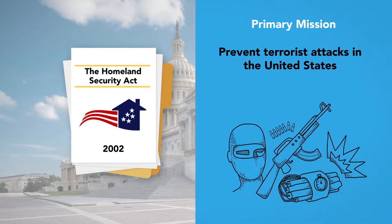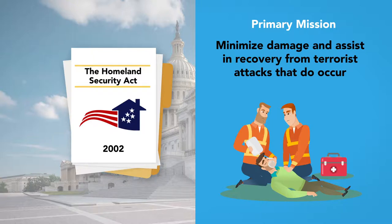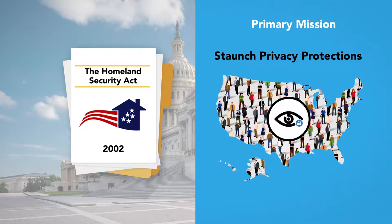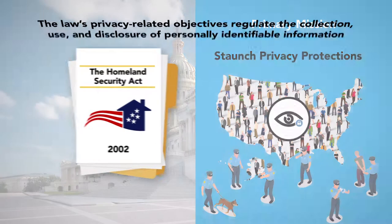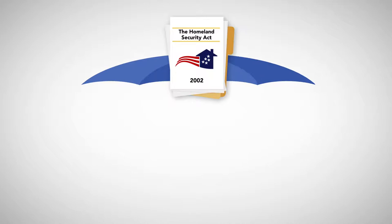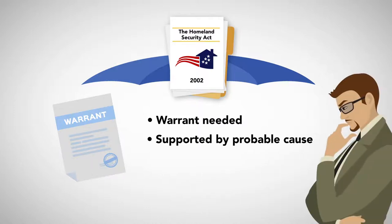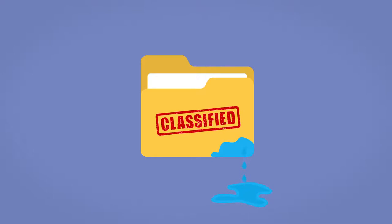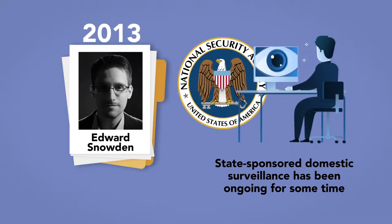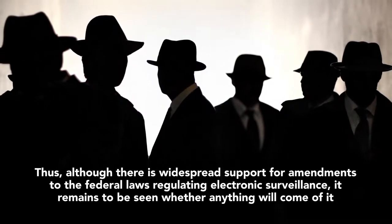The Homeland Security Act of 2002, originally introduced in the aftermath of the September 11 terrorist attacks, represented one significant development in federal electronic privacy protections. Its primary mission was to prevent terrorist attacks, reduce vulnerability to terrorism, and minimize damage from attacks that do occur. However, the law also introduced staunch privacy protections designed to ensure that domestic citizens' privacy rights remain intact despite increased law enforcement efforts. The law's privacy-related objectives regulate the collection, use, and disclosure of personally identifiable information, prohibiting the federal government from using certain technologies to monitor private activities without a warrant. However, its effectiveness has been questioned — most notably by classified information leaked by former NSA subcontractor Edward Snowden in 2013, indicating that state-sponsored domestic surveillance had been ongoing.